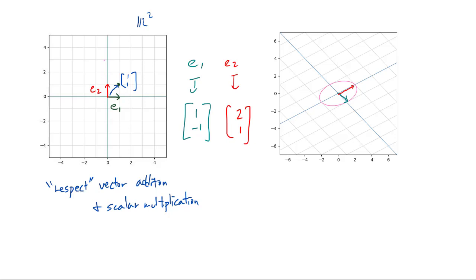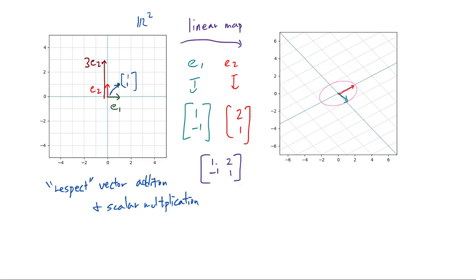And respecting the scalar multiplication is analogous. So we want the vector 3 times e2 — a vector that stretches all the way — to be sent to 3 times where e2 is sent to. So you want that vector to be sent to this long arrow right here. And what we are going to see is that this map that sends e1 to (1, -1) and e2 to (2, 1) can also be described as a matrix. So this is one way of even defining a matrix, and we're simply going to put these two vectors together. This linear map — this map between vector spaces — due to this respecting property, you say that the map is linear, and it's going to be written as the matrix [1, 2; -1, 1].